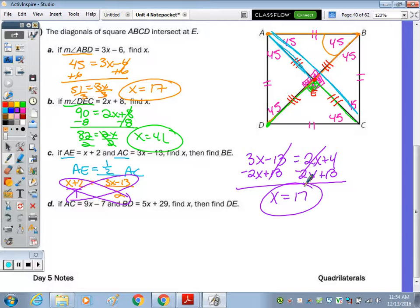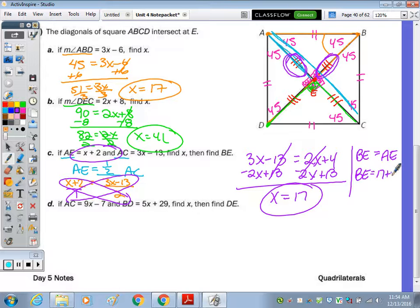And now BE though. BE, where is BE? BE is right here. That's the same as any part of the diagonal. So BE, I'm going to say, is equal to AE, and then just do, because AE is X plus 2, 17 plus 2 would be 19.